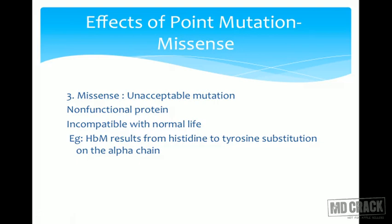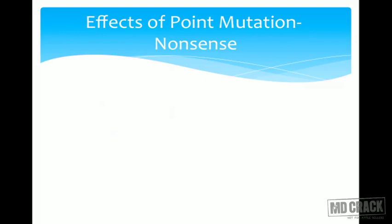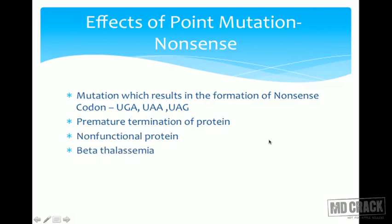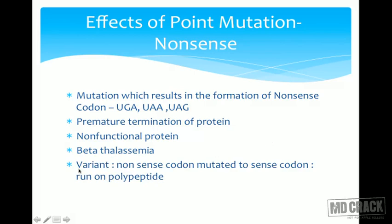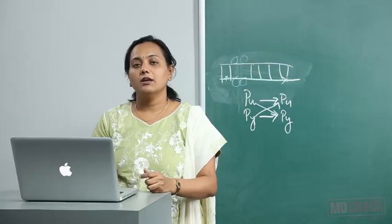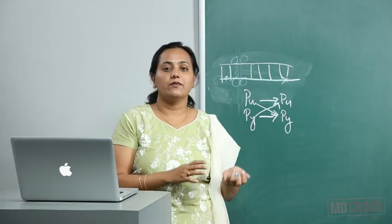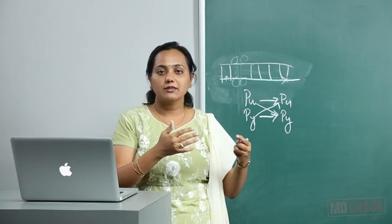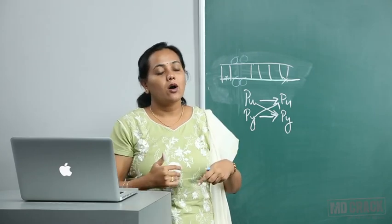Unacceptable missense results in a non-functional protein incompatible with normal life — for example, HbM (methemoglobin). Point mutations can also be nonsense mutations, where a mutation results in the formation of a nonsense (stop) codon, causing premature termination of the protein and producing a non-functional protein. Example: beta-thalassemia. Conversely, a nonsense codon mutated to a sense codon results in a run-on polypeptide that keeps growing.